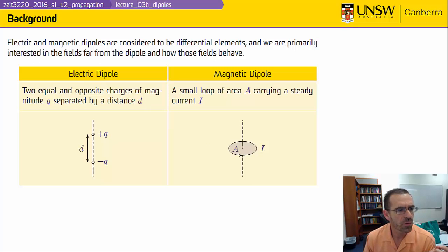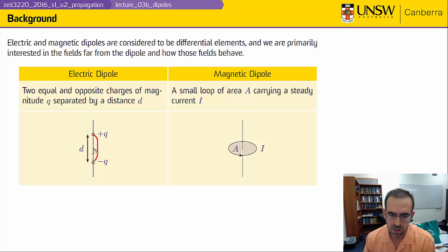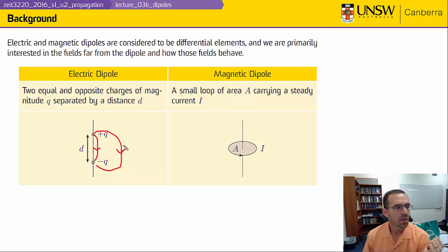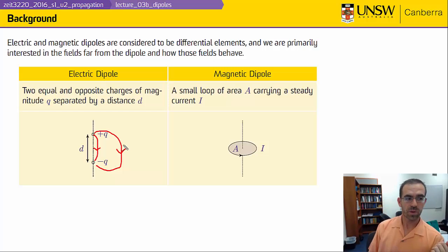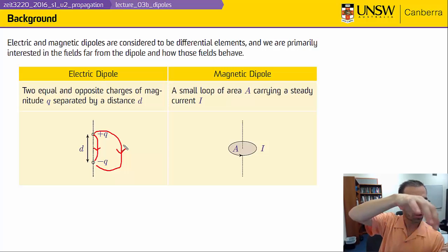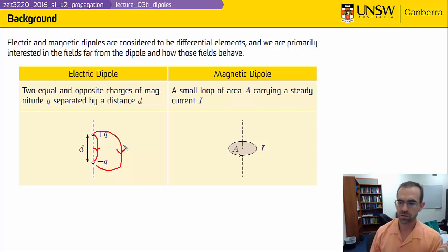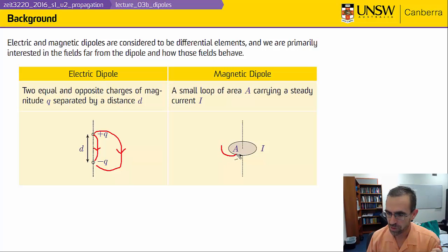Just by way of previewing how things are going to work out: we know from Coulomb's law that we're going to have electric field lines that start on the positive charge and end on the negative charge, so we expect the field distribution to look like this. And from the Biot-Savart law or Ampere's law, this loop of current is going to set up a rotating magnetic field — so my magnetic flux density B is going to look like this.